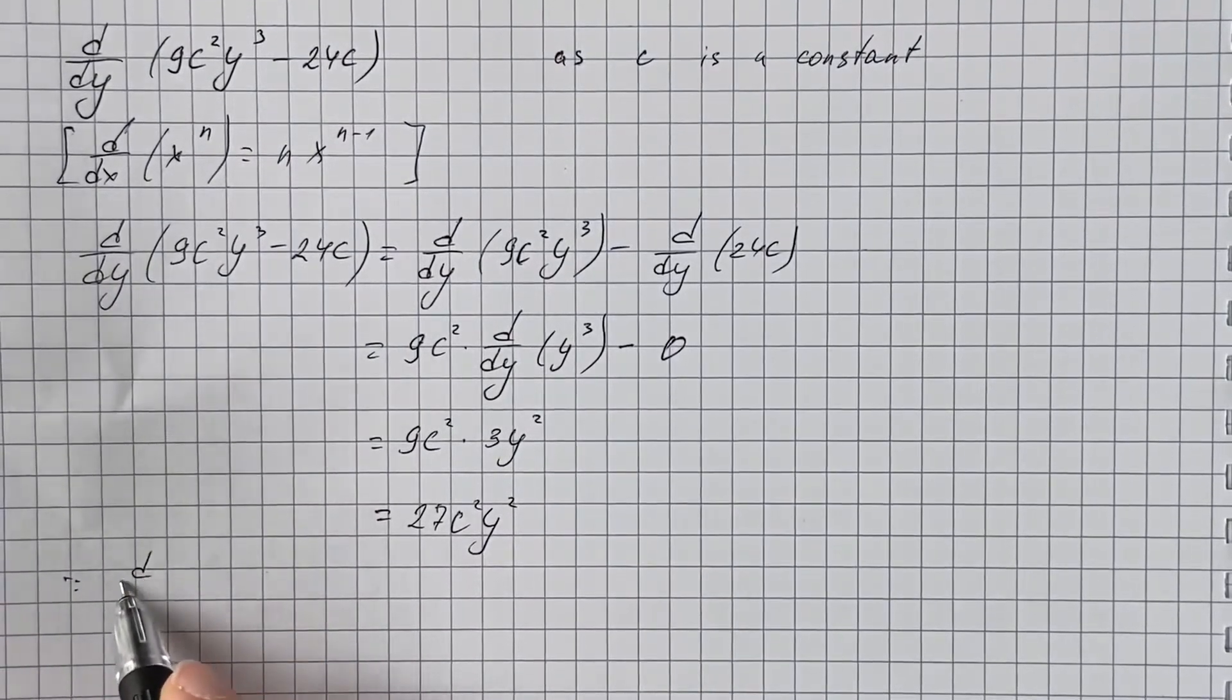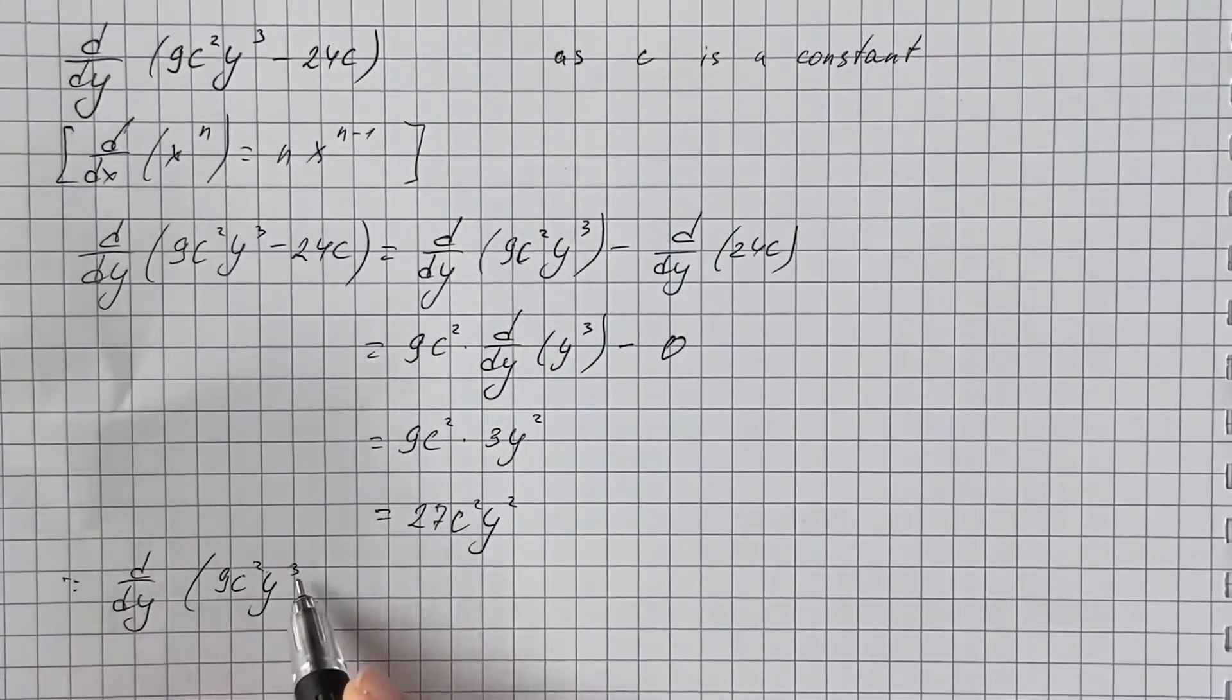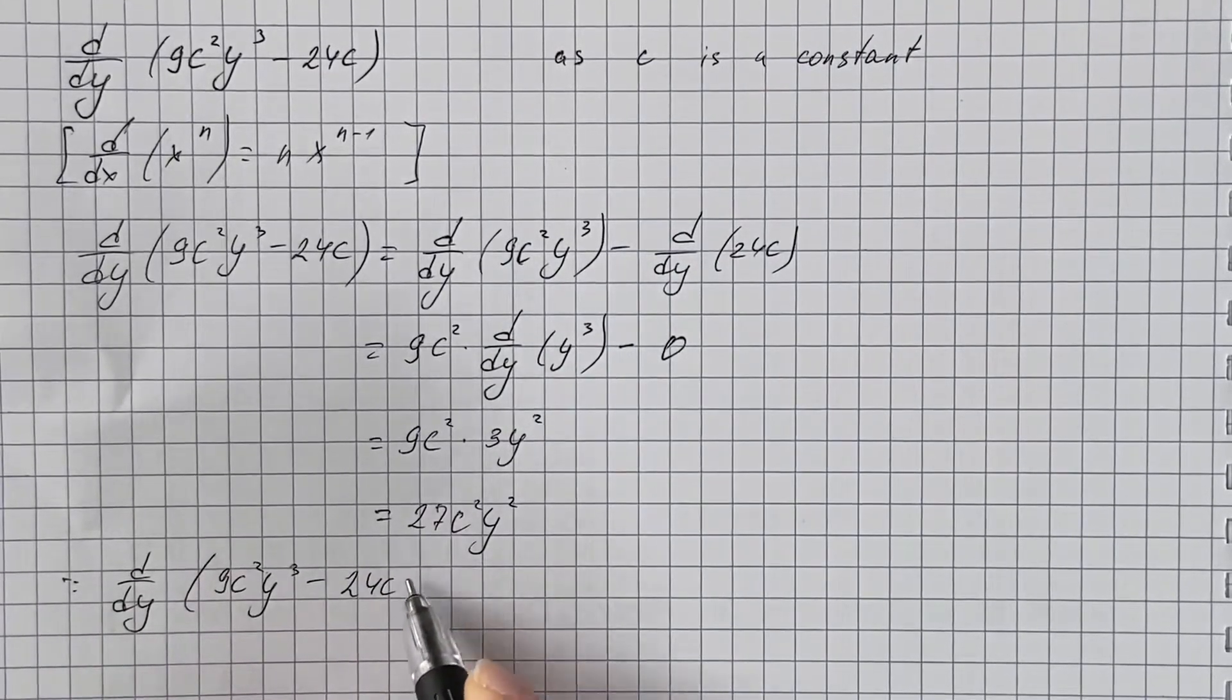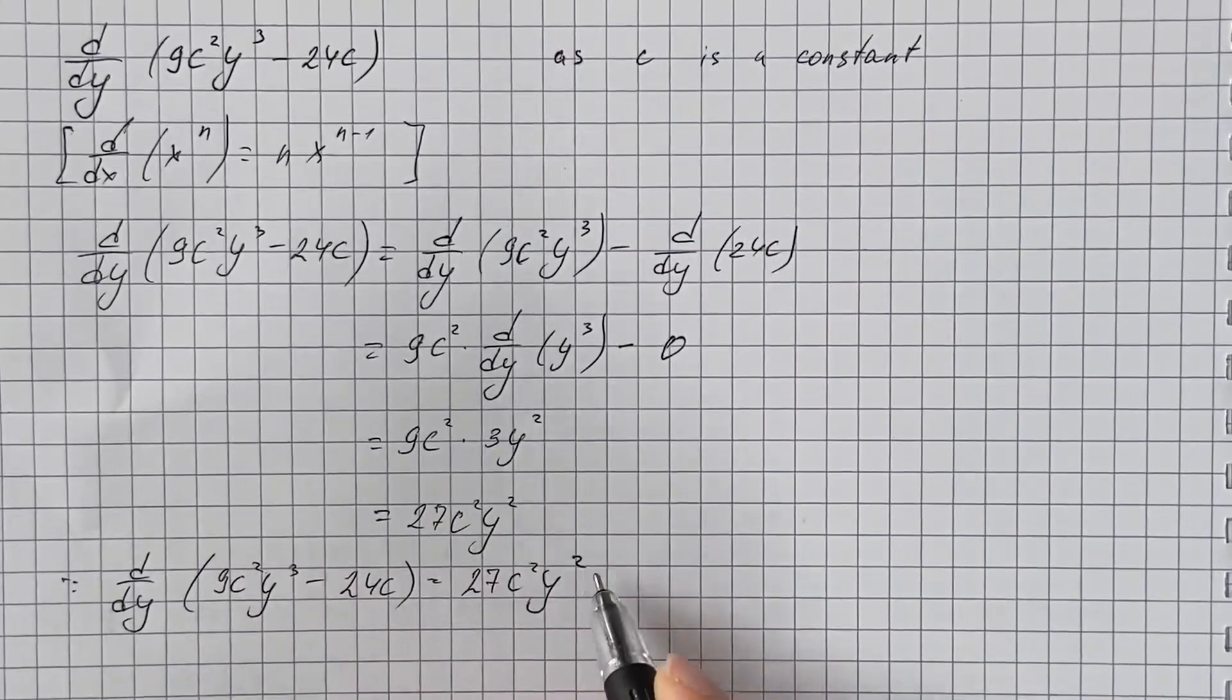Therefore our answer is the derivative with respect to y of 9c squared y cubed minus 24c is 27c squared y squared.